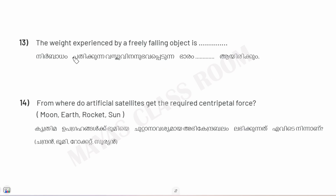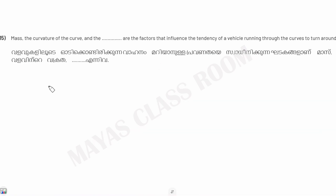The weight experienced by a freely falling object is zero — this is weightlessness. From where do artificial satellites get the required centripetal force?